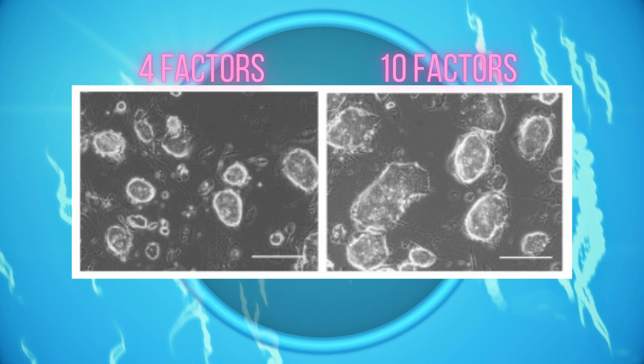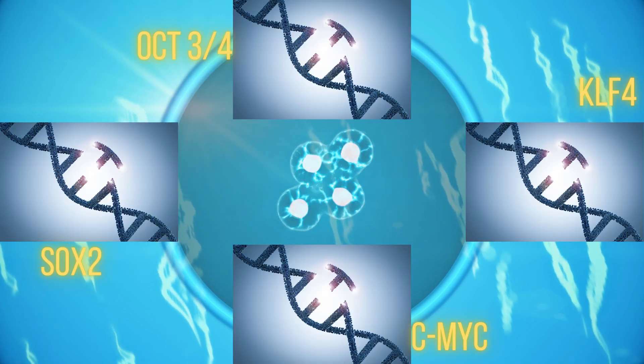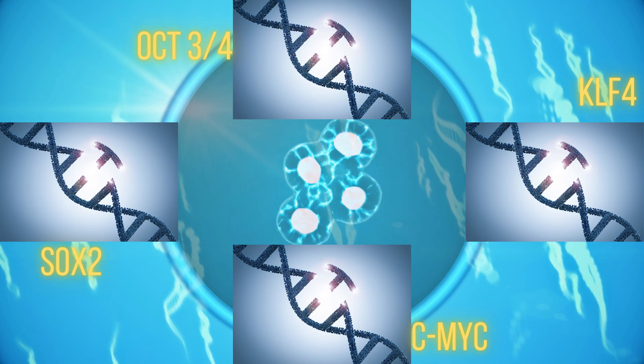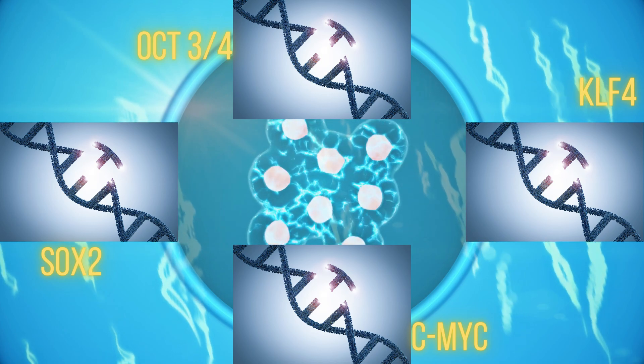When they inserted just these four into the cells, they obtained colonies that were resistant to G418, and were similar in appearance to embryonic stem cells. These factors were the genes for OCT3/4, SOX2, C-MYC, and KLF4. This appeared to be the minimum number of genes that were critical for the transformation into an appearance like stem cells with characteristic pluripotency.